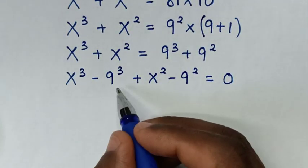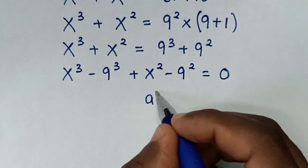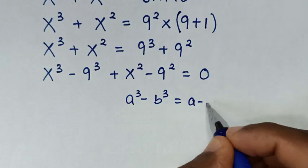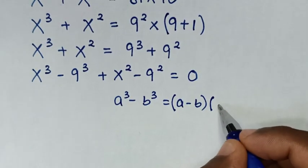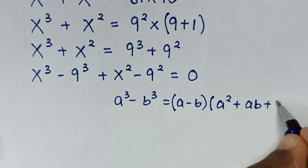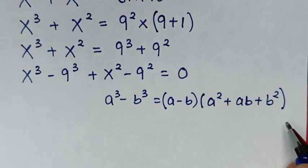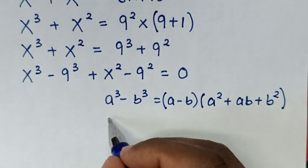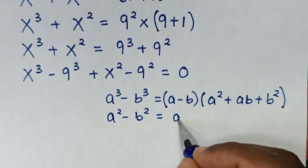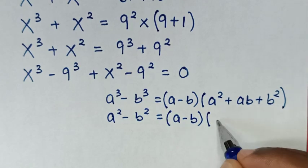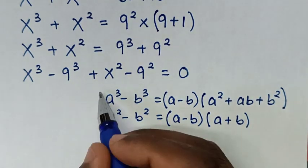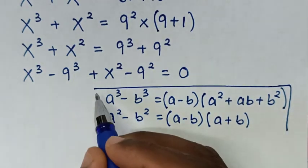The first part is in the form a³ - b³, which equals (a - b)(a² + ab + b²). The second part is in the form a² - b², which equals (a - b)(a + b). We will apply these rules to our equation.